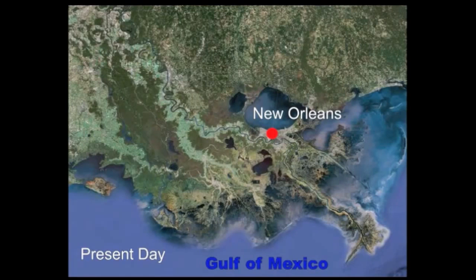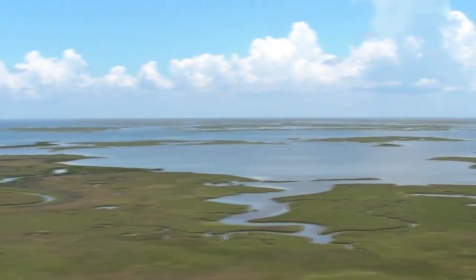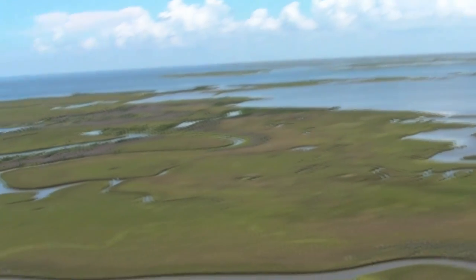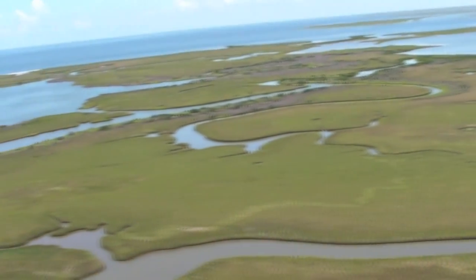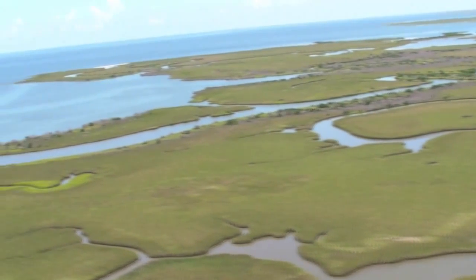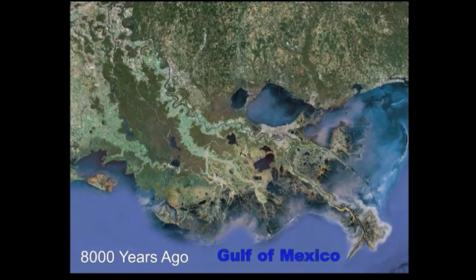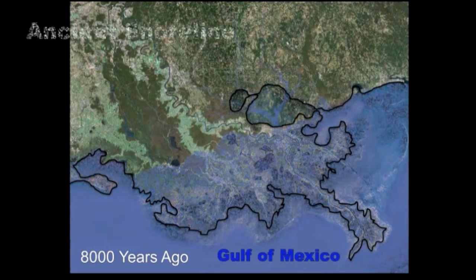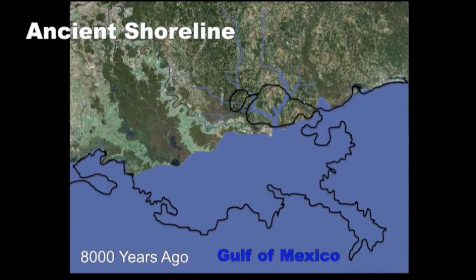The Louisiana coast is a dynamic system built in part by the action of the Mississippi River. To understand how subsidence affects the Mississippi River Delta and its wetlands, we first have to go back a few thousand years. Because glaciers were melting 8,000 years ago, sea levels were higher at that time, so much of the present-day coast was underwater. Where New Orleans is located today was also under the sea.